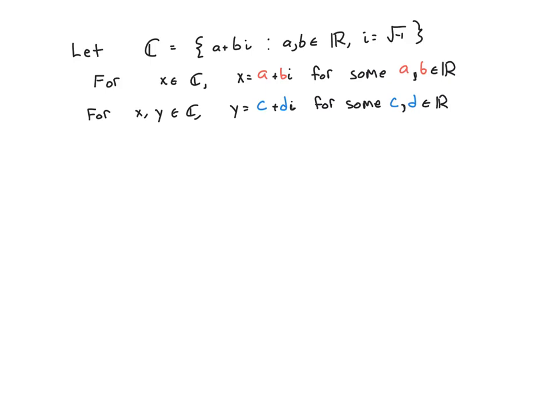So for any complex number by definition it must be able to be written as a plus bi for some a and b in ℝ. Likewise if I take another complex number say y, I should be able to write y as c plus di for some real numbers c and d.